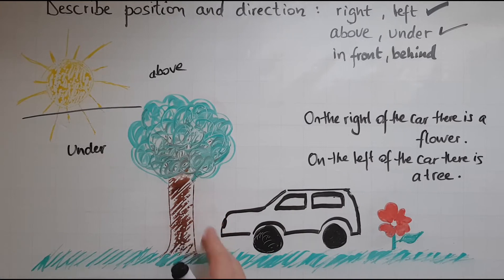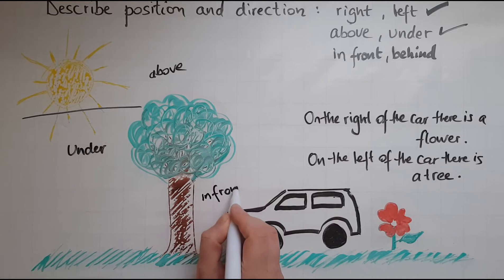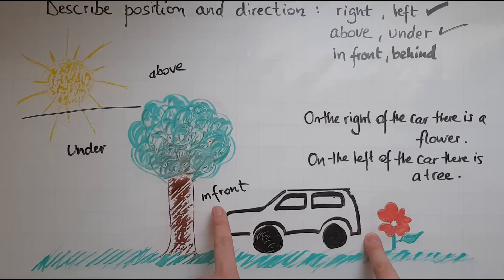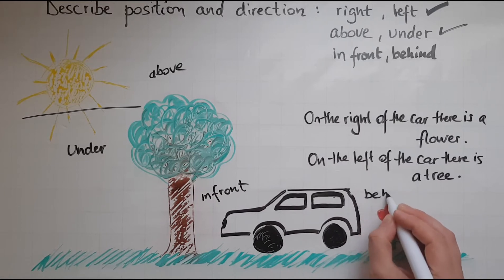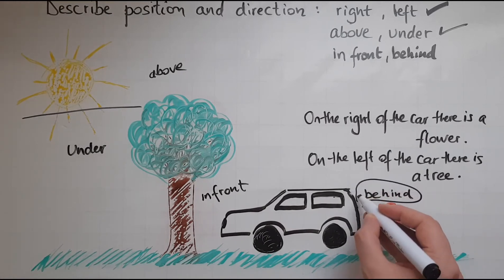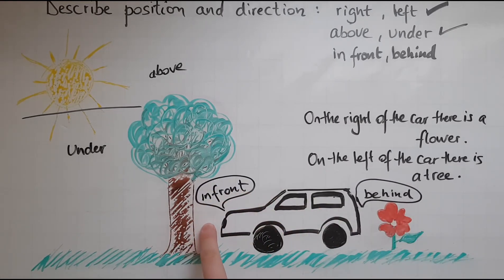In front of the car — looking at the front of the car — there is a tree. Behind: looking at the back, not the front, behind the car there is a flower. So front and behind — in front relates to the front, behind relates to the back.